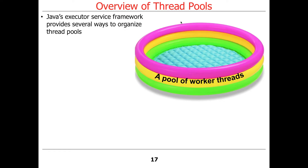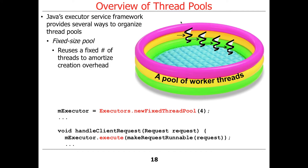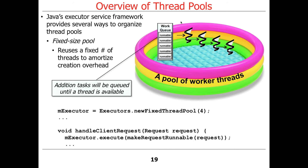The Java Executor Framework provides a number of different ways to organize thread pools. One common way is to use a fixed-size pool with a fixed number of threads, which amortizes the creation of threads. Here's a simple example from a web server: we make a fixed-size thread pool — say, size four — and then we call execute. Regardless of how many client requests come in, only four of those things will be running at a time. That might actually be a bad setting for a web server if threads are blocked in I/O, so you might want to make it eight instead of four. As work comes in and no thread is available, work is simply queued up in a work queue and processed later.